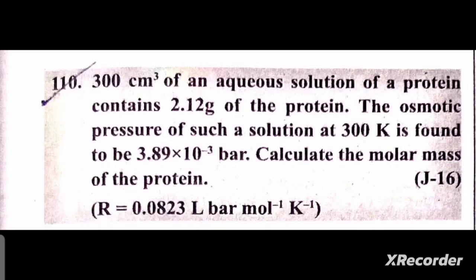This numerical is based on the colligative property osmotic pressure. 300 cubic centimeters of an aqueous solution of protein is given. The volume of the solution is 300 cm³, which converts to 0.3 liters.